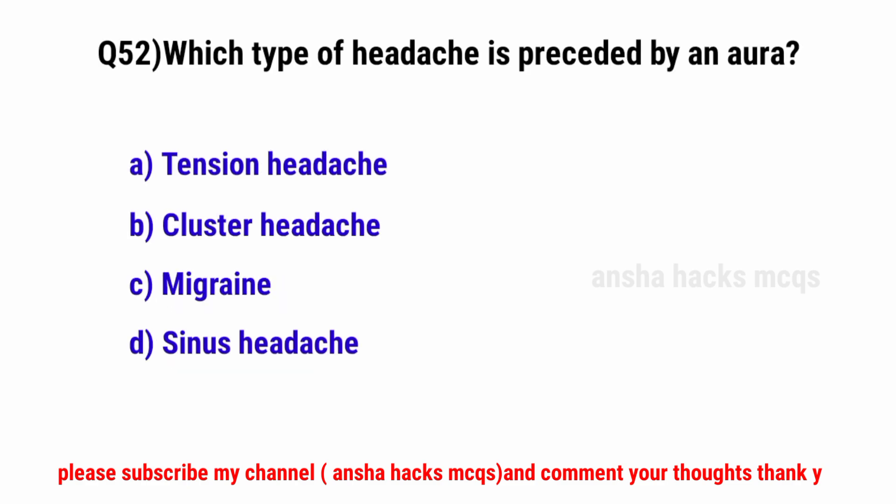Question No. 52. Which type of headache is preceded by an aura? The correct option is C: Migraine.